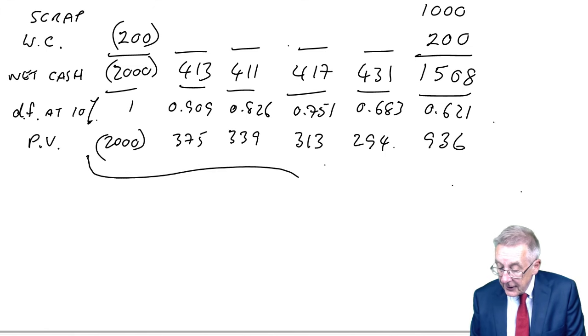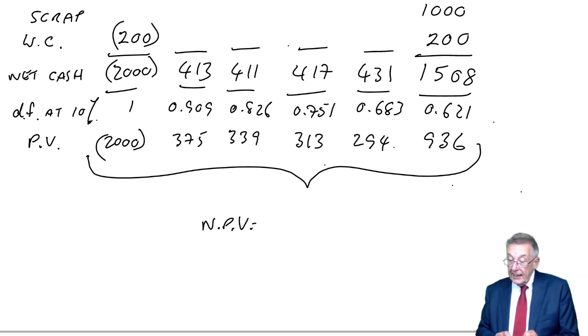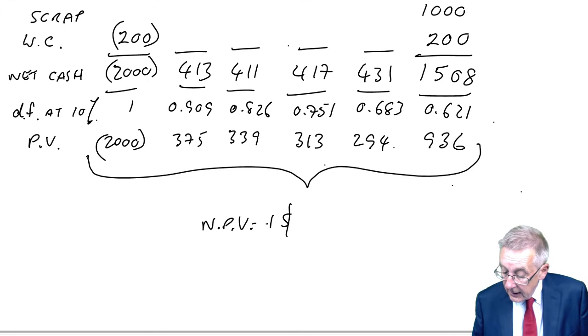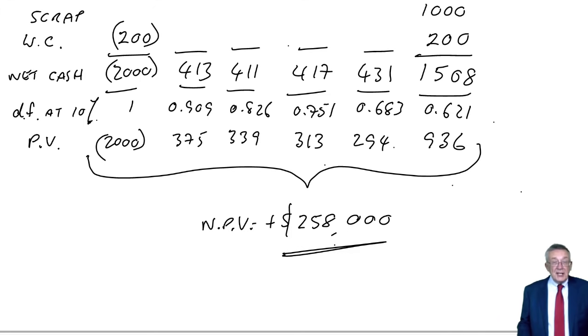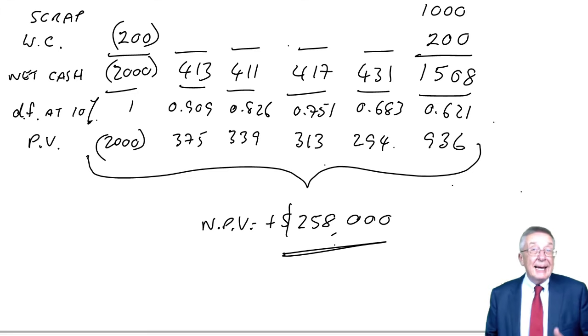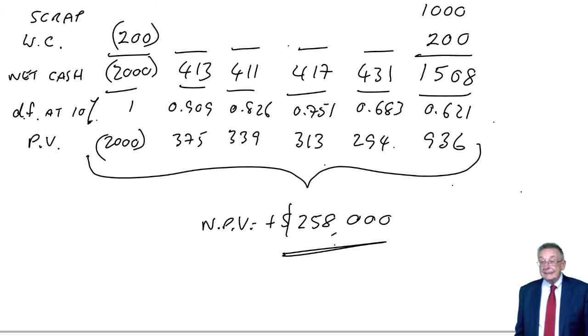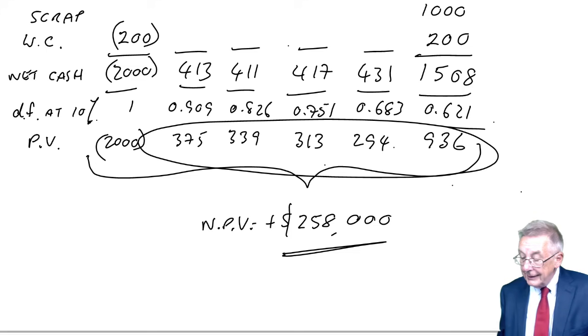In order to make the decision, we need to calculate the net present value: 375 plus 339 plus 313 plus 294 plus 936 minus 2,000. I get plus 258,000 - we have everything working in thousands. Our decision, the most basic thing of all: since the NPV is positive, we would accept the project, subject in real life to the accuracy of all the estimates we've used. Had it been negative, we would reject. You're paying out 2,000 to get a project with a value of 2,258. The net value is positive.